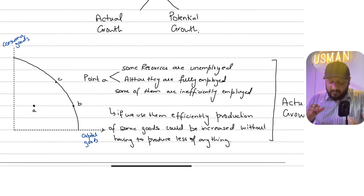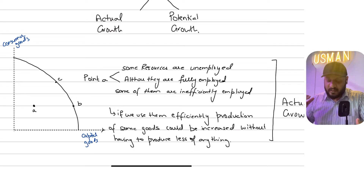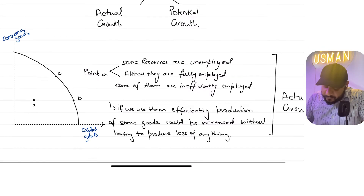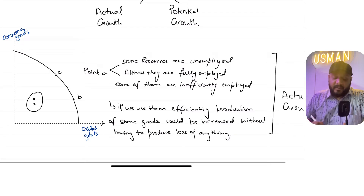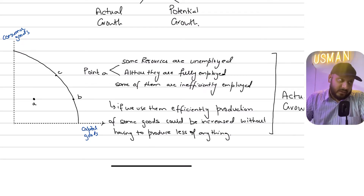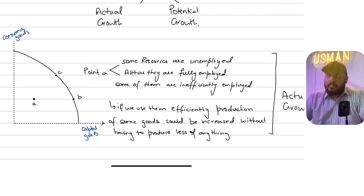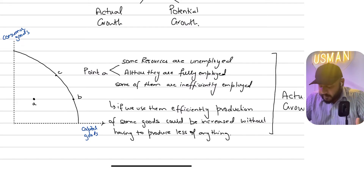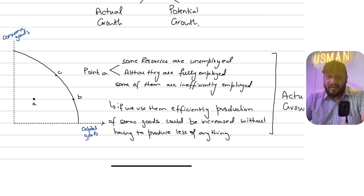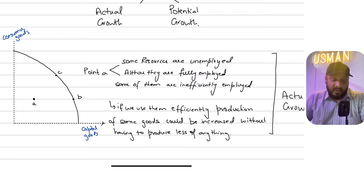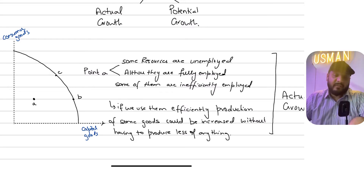When drawing an economy's PPC, it's best advised that you write consumer goods and capital goods on the X and Y axis. At point A, you're inside the PPC. Any point inside the production possibility curve will be inefficient because your resources are unutilized — you're underemployed, your resources are unemployed, you're below full employment — representing allocative inefficiency.